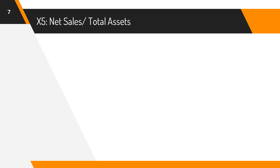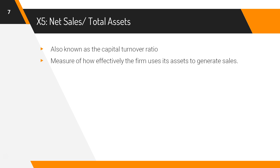X5 is net sales divided by total assets. This is also known as the capital turnover ratio and measures how efficiently the firm uses its assets to generate sales. It is a great indicator of efficiency and business quality when comparing against previous years. The more money you can generate from assets, the better it is.